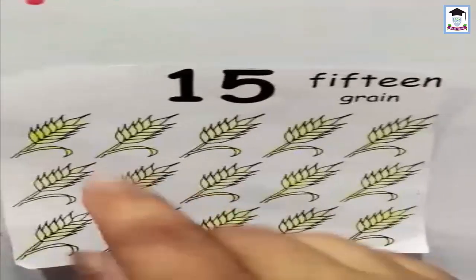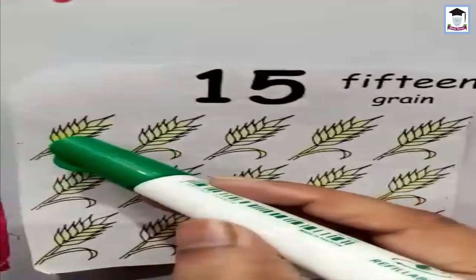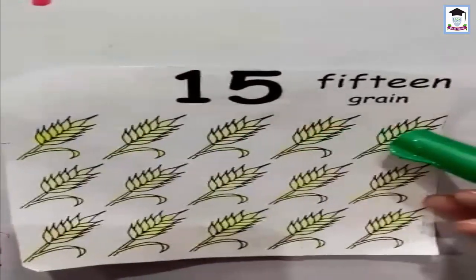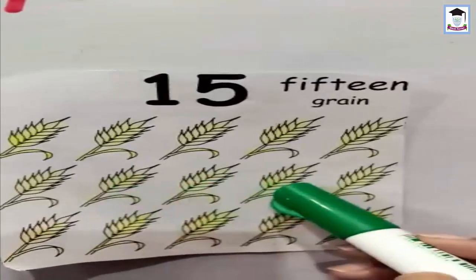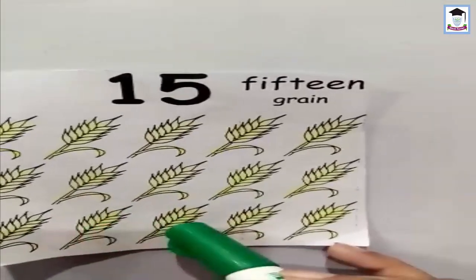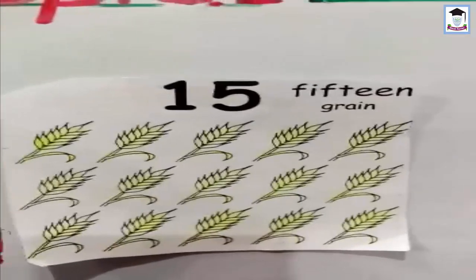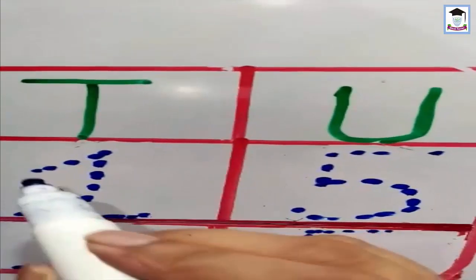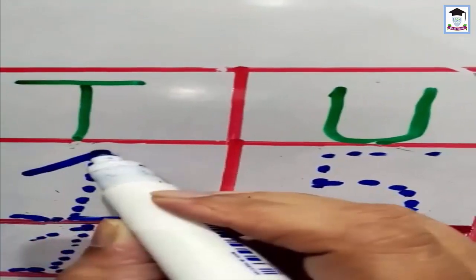How many grains are there? Let's count: 1, 2, 3, 4, 5, 6, 7, 8, 9, 10, 11, 12, 13, 14, 15. How many grains? 15. How many? 15.